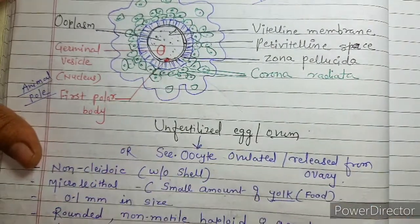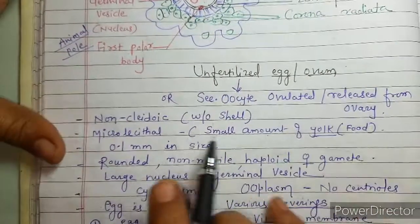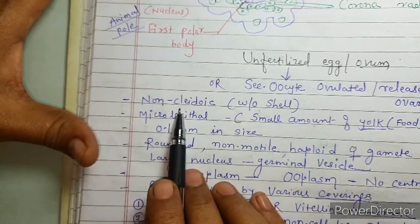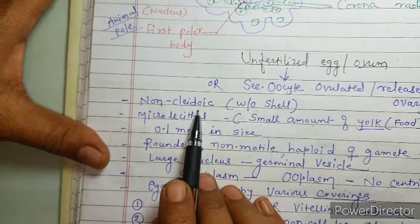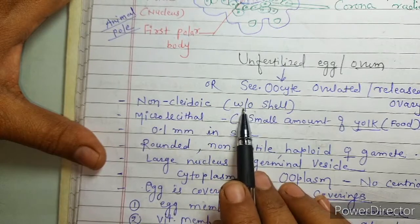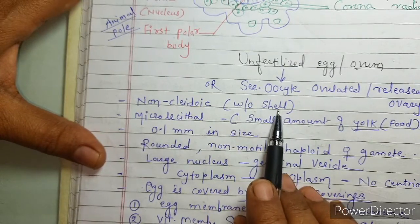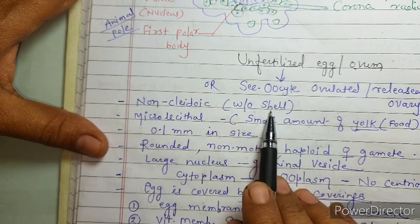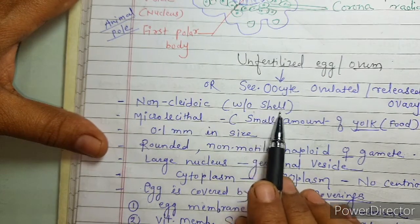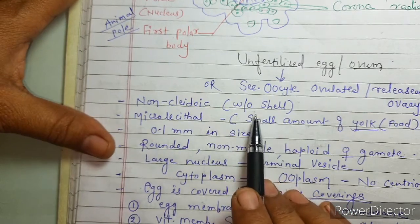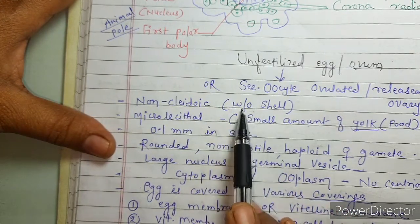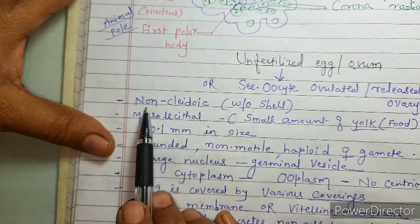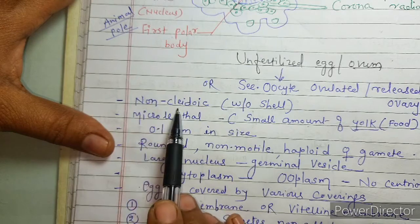The secondary oocyte is known as non-cleidoic in nature. This is a new word for you — non-cleidoic. It means without shell. So it is non-cleidoic.